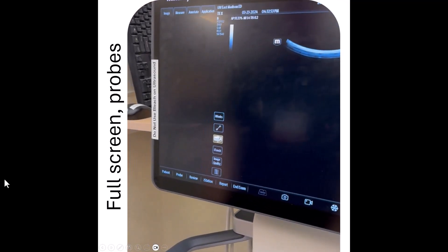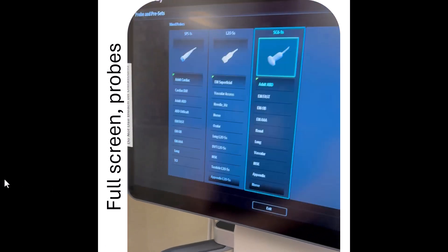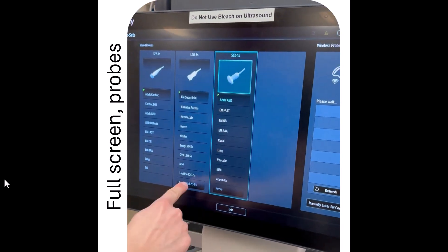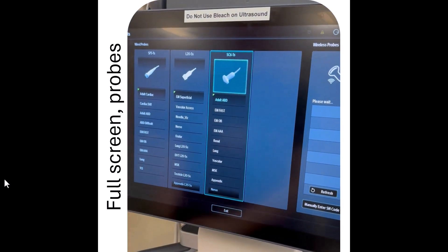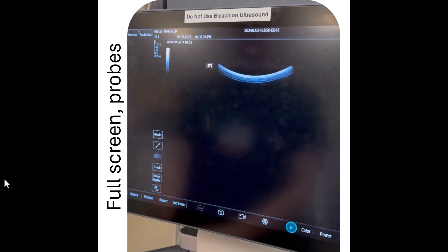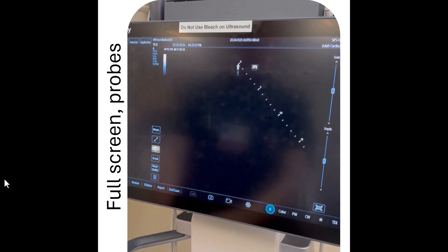And then to switch between probes, you're going to press the probe button on the bottom left, and that'll pull up the different probes and the different exam types. Once you select an exam type, click it once, and then give it a second, and it'll switch over for you.